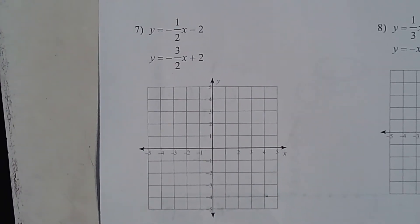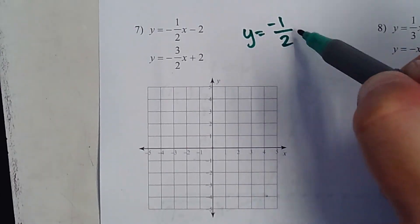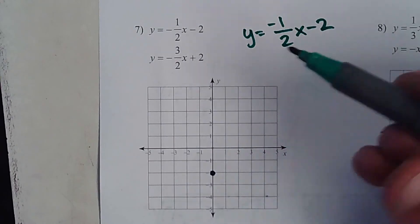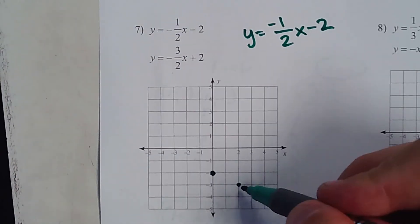All right, let's take our final look at number 7. To graph this, I want you to be able to see this clearly, that this is what it looks like. Negative 2, down 1, over 2. Down 1, over 2. Do it again. Down 1, over 2.